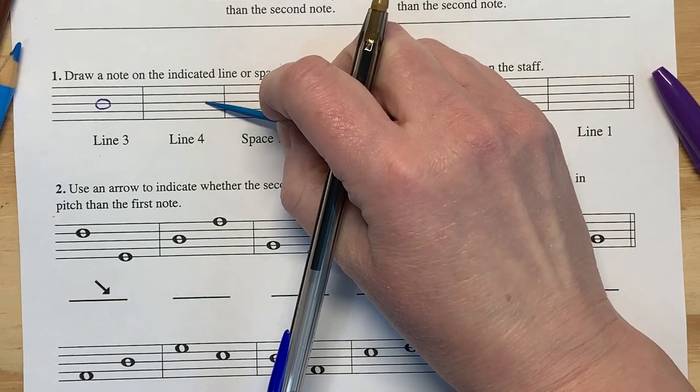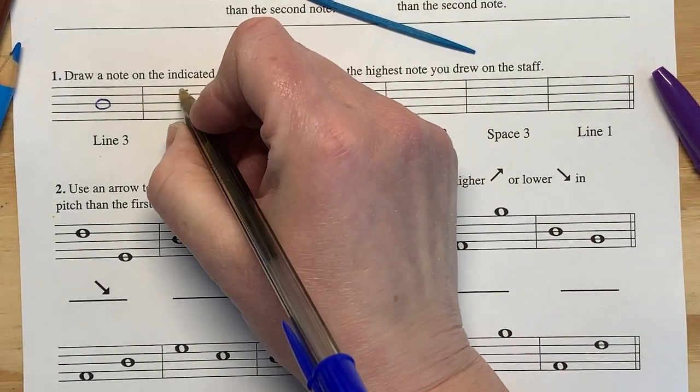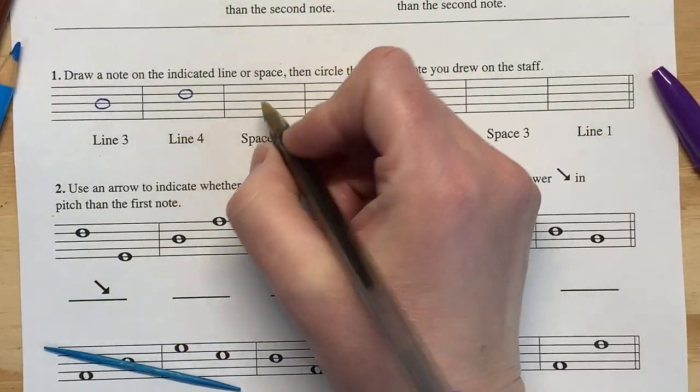Line four. One two three four. Always counting those lines from the bottom up. The first space. Kind of easy to see.